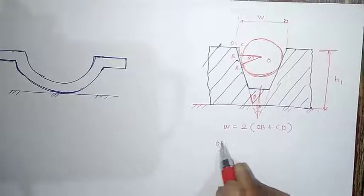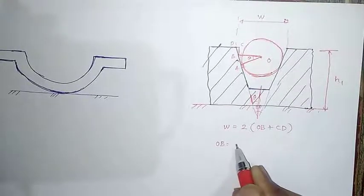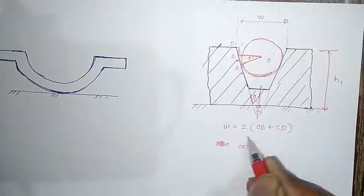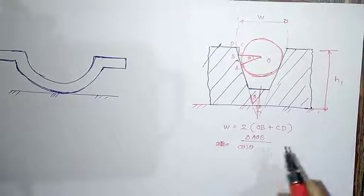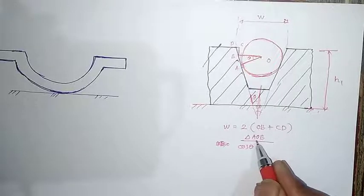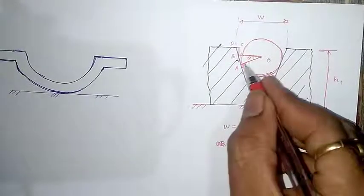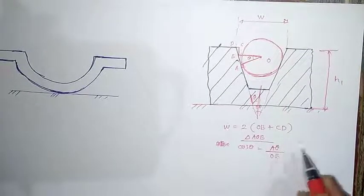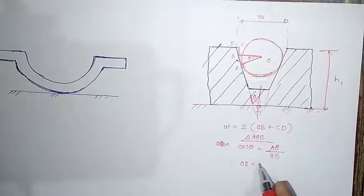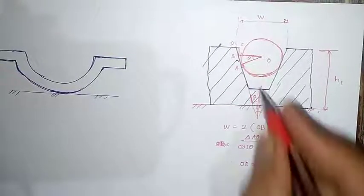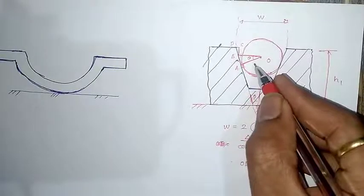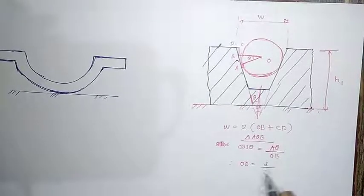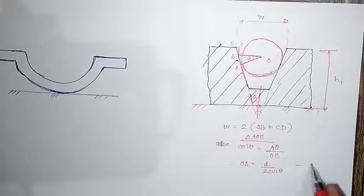Now we know θ. Let's find distance OB. To find OB, I will apply cos θ to triangle AOB. Applying cos θ: cos θ = AO divided by OB. Therefore, OB = AO divided by cos θ. AO is the radius of the sphere, which is also known. So OB = (d/2) / cos θ. This is now known.